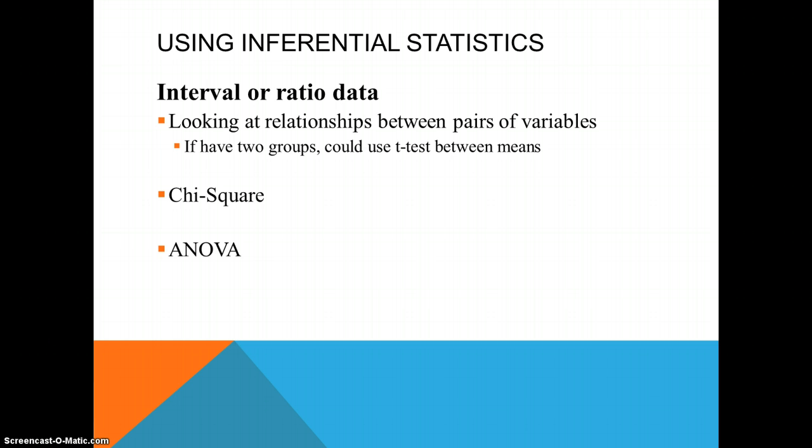Now remember that inferential statistics takes a look at the two highest levels in the hierarchy of data, interval and or ratio data. When we're looking at inferential statistics we're looking at relationships between variables. Now if we only have two groups we could use a simple t-test, which is the same as a one-way ANOVA. But for this course we're looking at chi-square and just plain ANOVA.